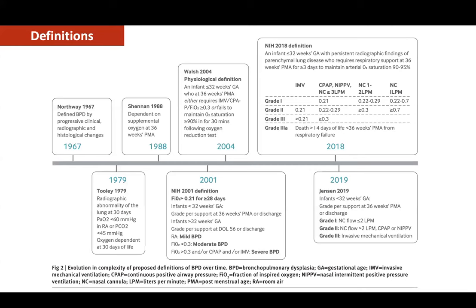None of these definitions were useful in predicting the long-term outcome of preterm babies defined as having BPD. So the NIH came up with a 2018 consensus statement where BPD was defined at 36 weeks of PMA, with the baby needing to be on respiratory support for more than three consecutive days maintaining saturation between 90 to 95%. This was graded into grade one, grade two, and grade three based on respiratory support and oxygen requirement.